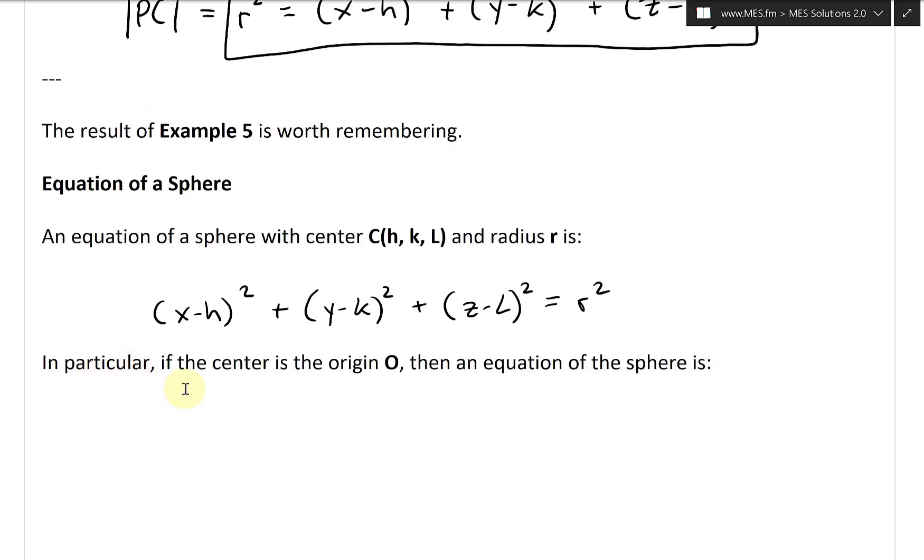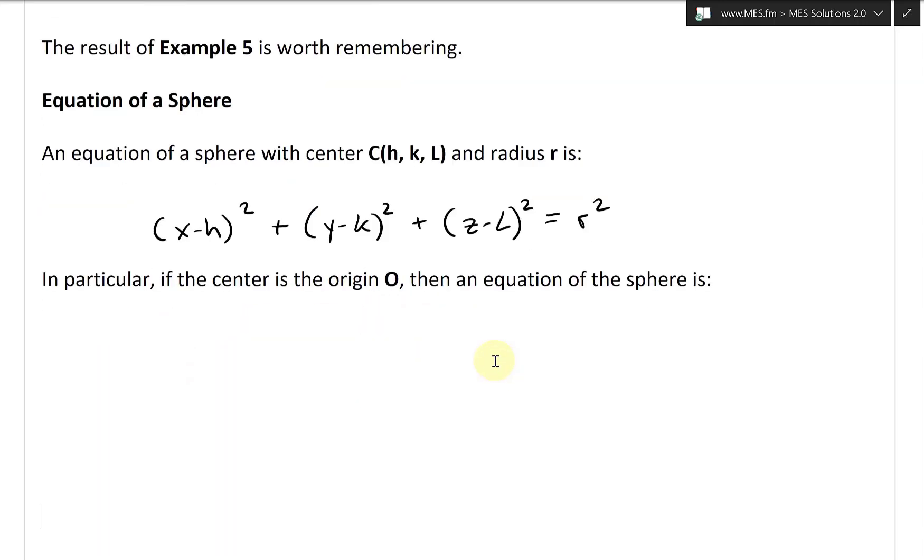Alright, so now in particular, if the center is the origin O, then an equation of the sphere is—the C is all going to be (0, 0, 0)—so that just means the equation is X squared plus Y squared plus Z squared equals R squared. Compare this with the equation of a circle, which is just X squared plus Y squared equals R squared.